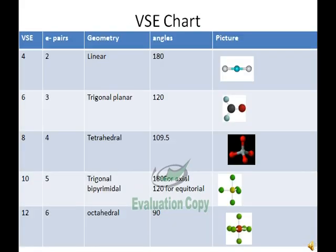This chart shows the different geometries that a molecule can take based upon VSC. The eight VSC we just solved for would take a tetrahedral shape, as shown in the picture on the far right. You will also see that there are several different shapes: linear, trigonal planar, tetrahedral, trigonal bipyramidal, and octahedral.